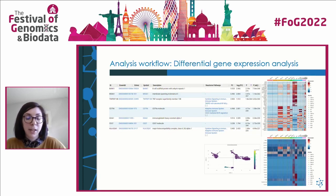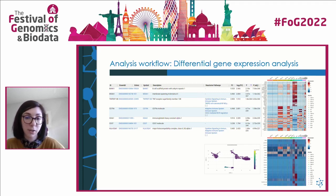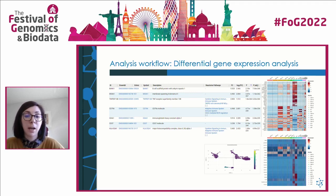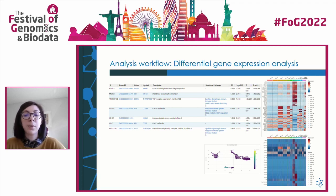To better understand the groups of cells we have identified — which may represent different subtypes or altered states of known subtypes — we perform differential gene expression analysis to find gene signatures of these populations. This can help extract signatures or biomarkers for isolation of these populations and help understand their function. We can compare cells of one cluster against all other cells to see the main gene signature of that population, as shown in the top heat map — the most highly up- and down-regulated genes in one of the two B-cell clusters compared to all other populations.